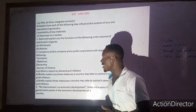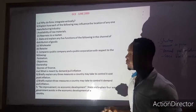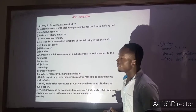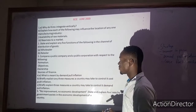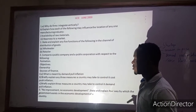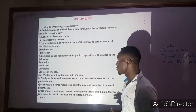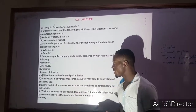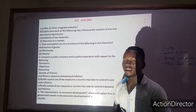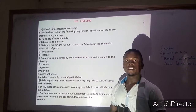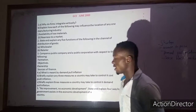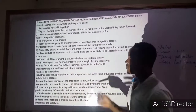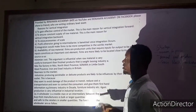They asked us to define and explain what is meant by demand, inflation, and then briefly give three measures. In the last part, they asked us the question of the role of government in economic development — to explain the ways that the government has improved economic development of the country. So we are going to be looking at the very first part, which talks about reasons why firms integrate vertically.